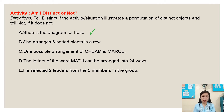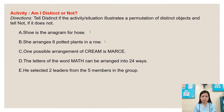Number two: she arranges six potted plants in a row. The answer is distinct. Number three: one possible arrangement of the word CREAM is MOERC. The answer is distinct because the word CREAM has all different letters.